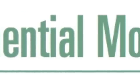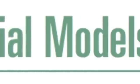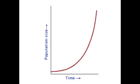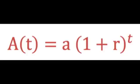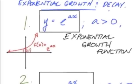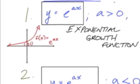Exploring exponential models in math. Essential understanding — A times T equals A times 1 plus R to the T. A quantity that changes by a fixed percentage.